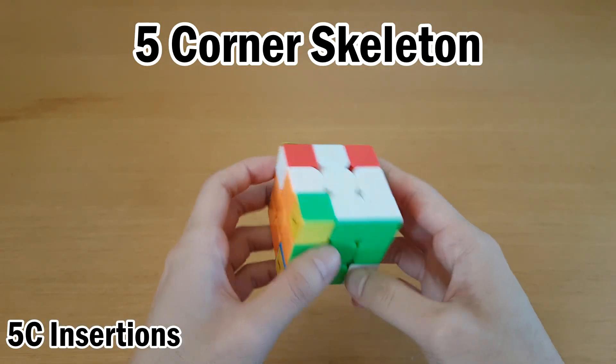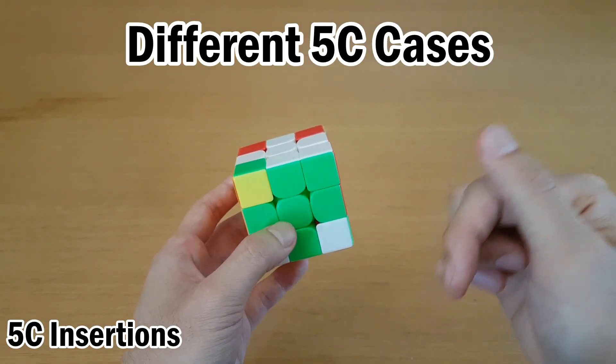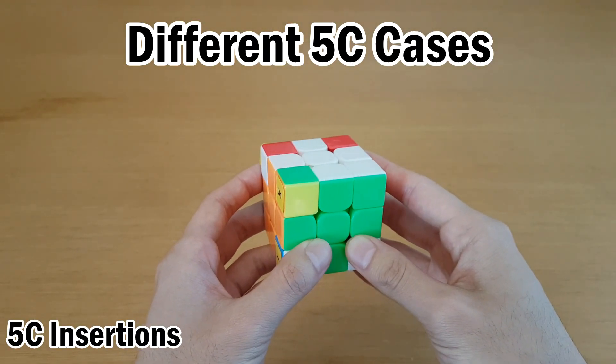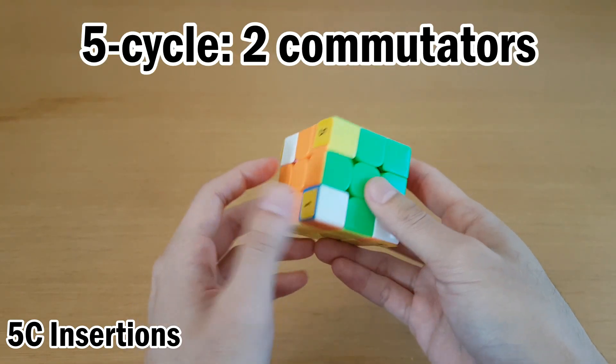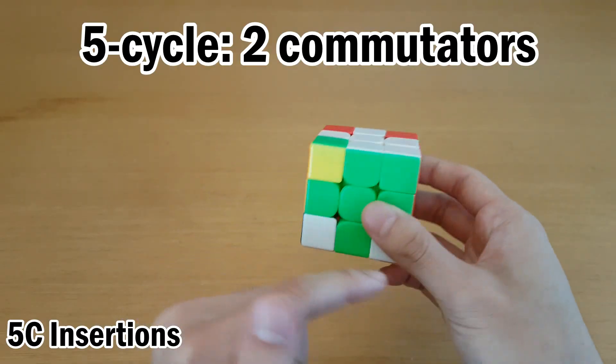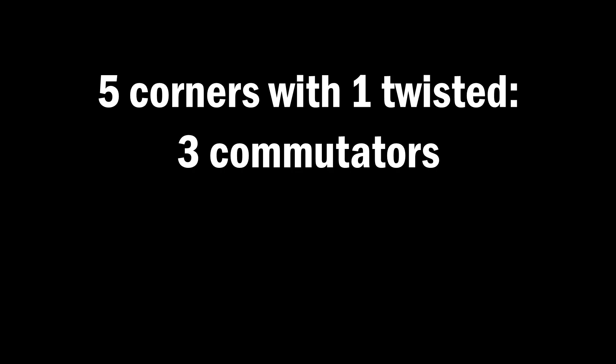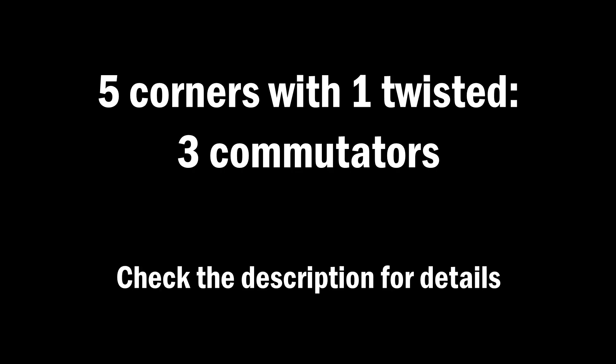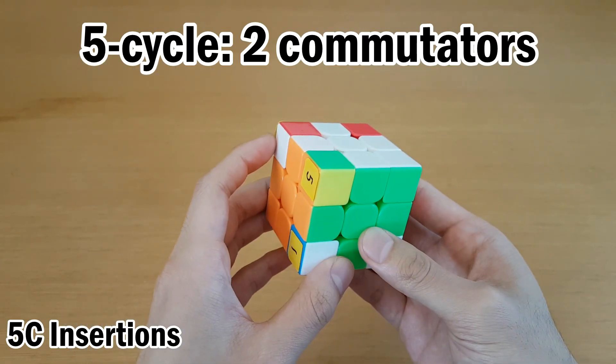Now let's look at a five corner skeleton. Before moving forward, if you're trying your own five corner skeleton, I recommend looking at the description to see what kind of five corner skeleton you have and what that requires. For example, a five cycle, which is what I have here, where I can number them so they all go to a different spot. This can be solved using an insertion of two commutators. But instead, if you have one of them in its right spot but twisted, you'll have to insert three commutators. In this case, we're going to have to insert two commutators, but there's a lot more options.